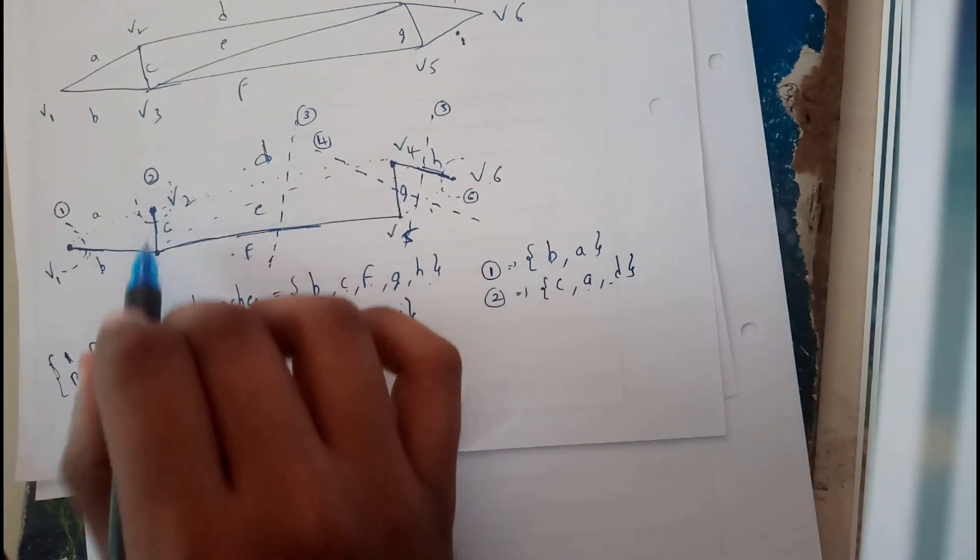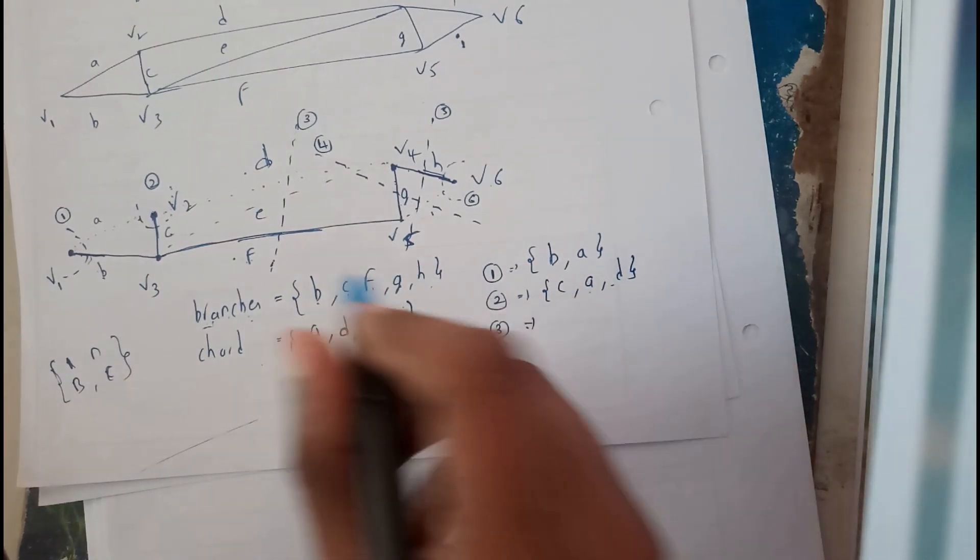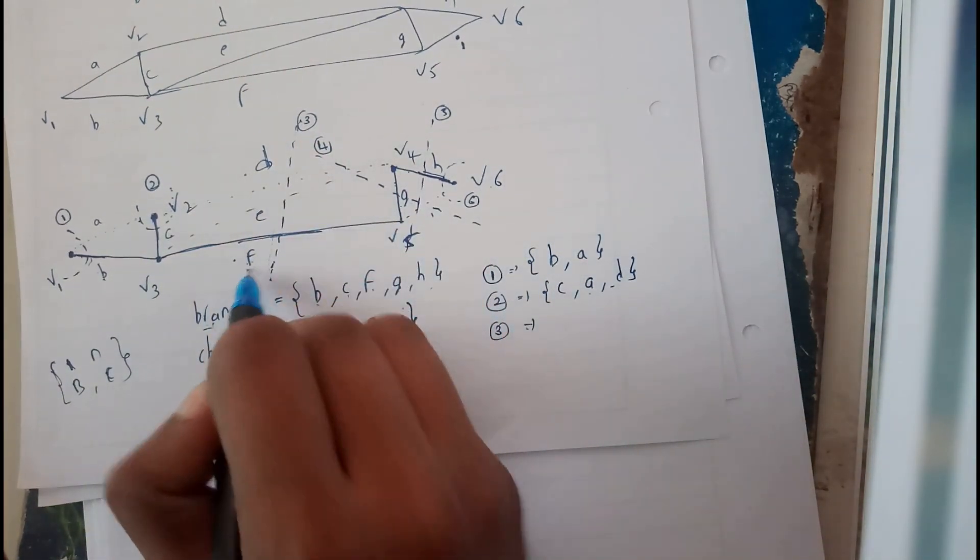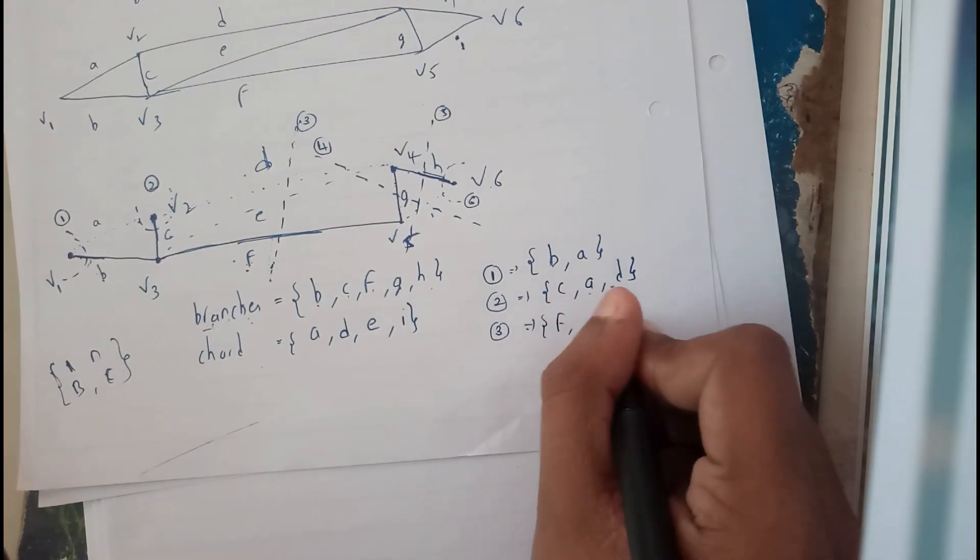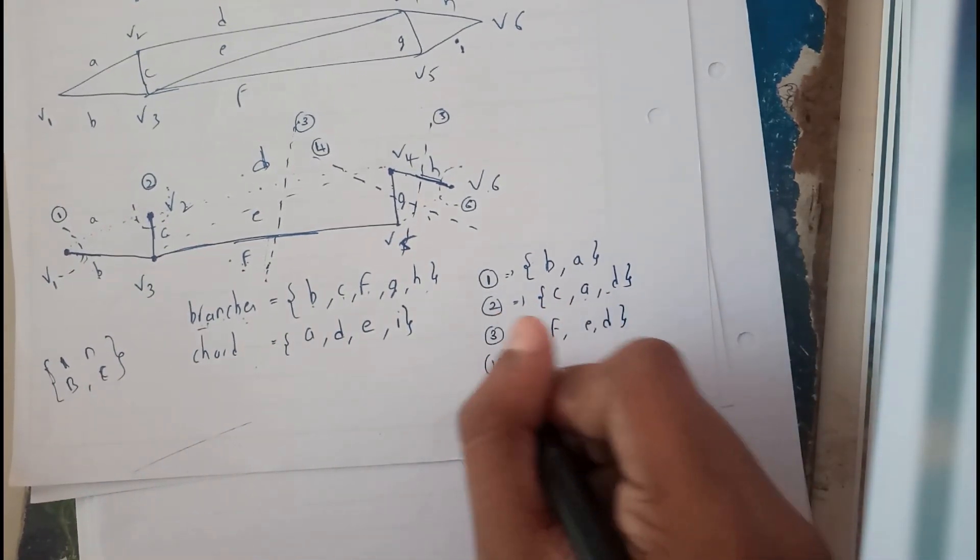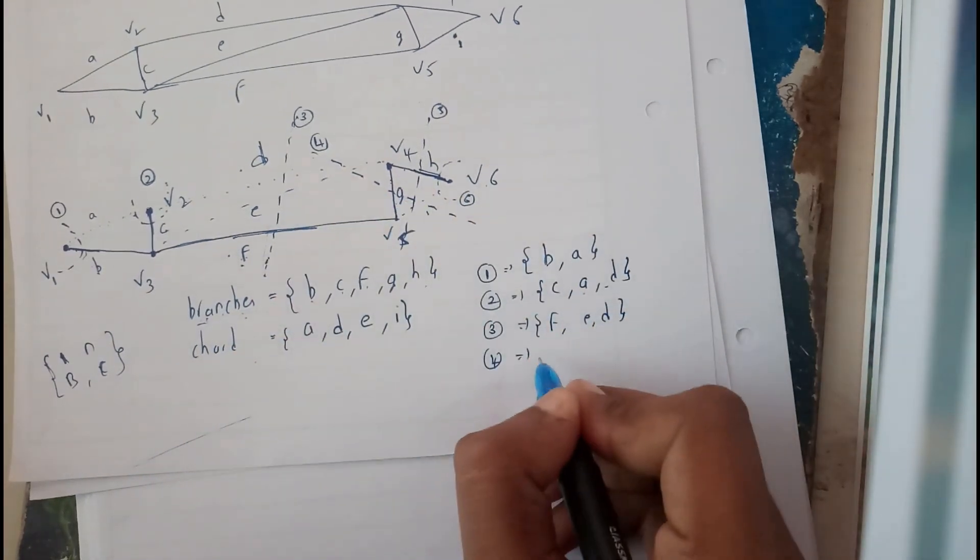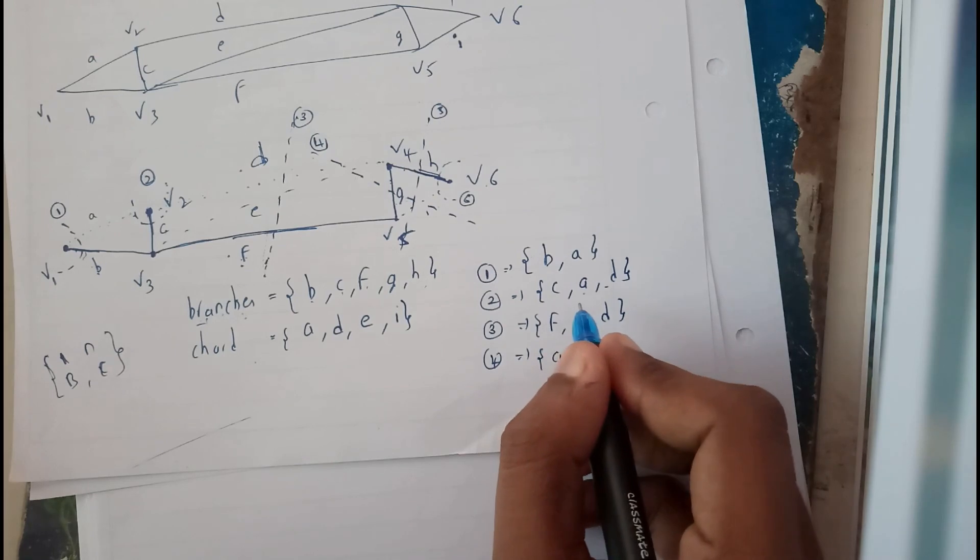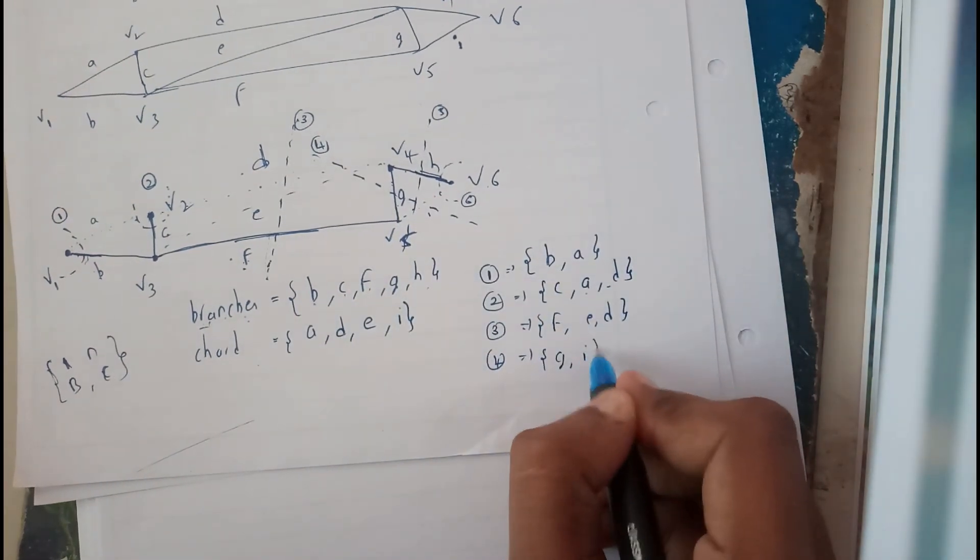Similarly, for the third one we are passing like this: F will be the branch, and E and D will be the chords. Next, for the fourth one, it is passing through G, so G is the branch and I is the chord.